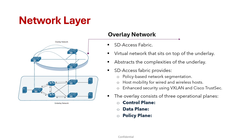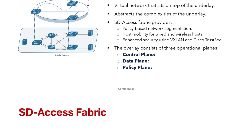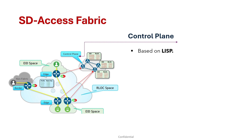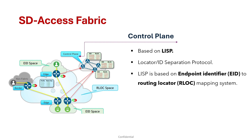The SD Access fabric control plane is based on LISP, or Locator/ID Separation Protocol. It is a protocol based on an endpoint identifier to routing locator (RLOC) mapping system. The RLOC represents the IP address of the network edge.